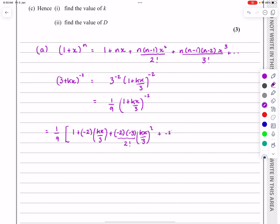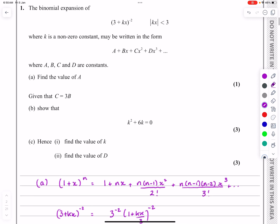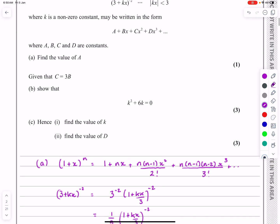And then it's n, n minus one, n minus two, kx over three cubed this time, all over three factorial plus dot, dot, dot. And from the original question, I know I only need those first four terms.